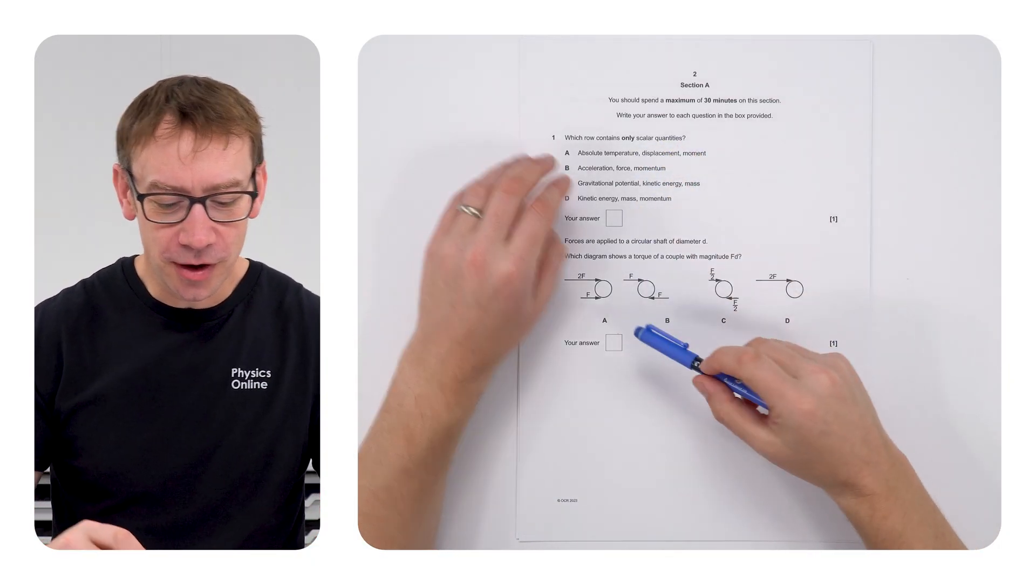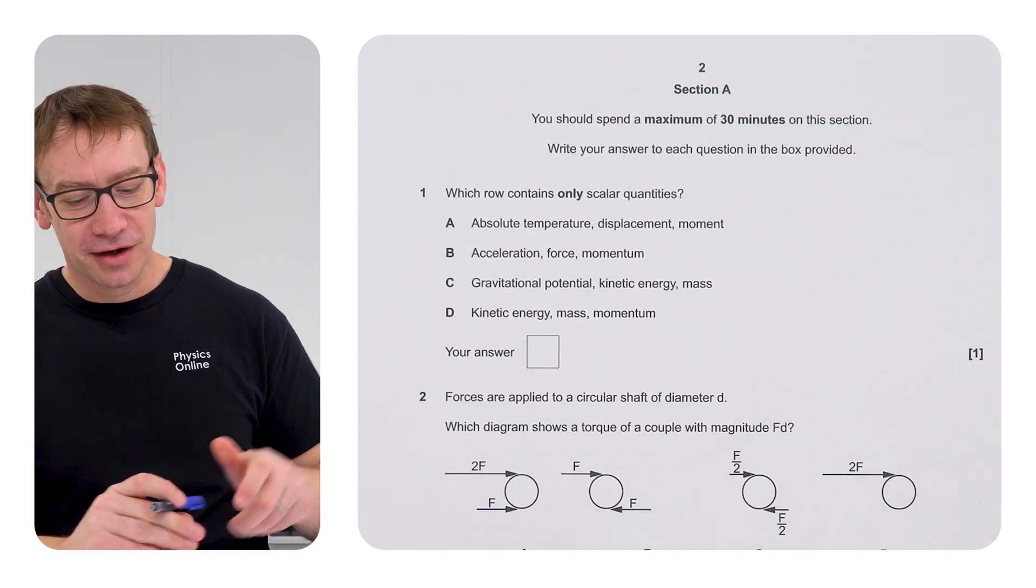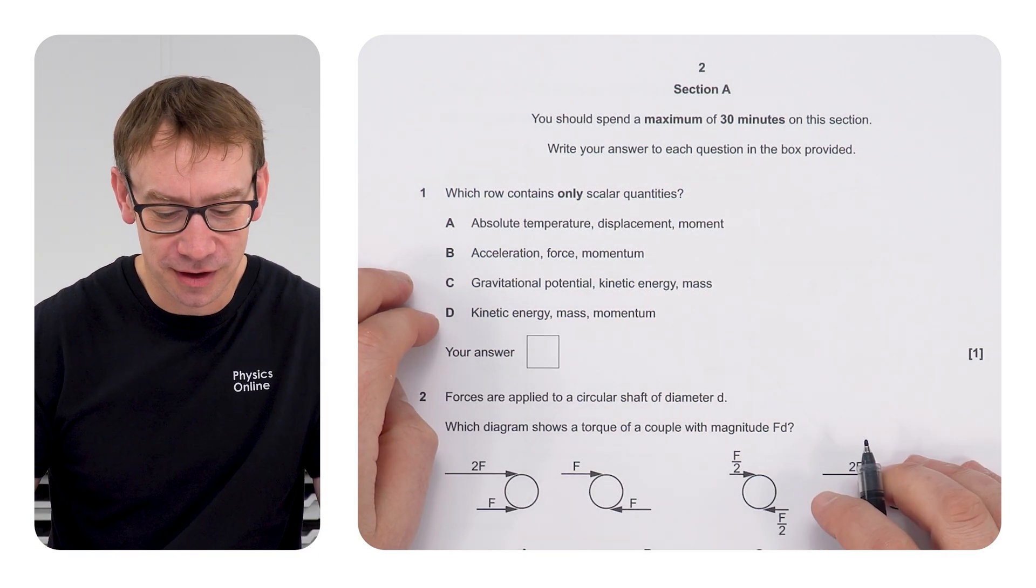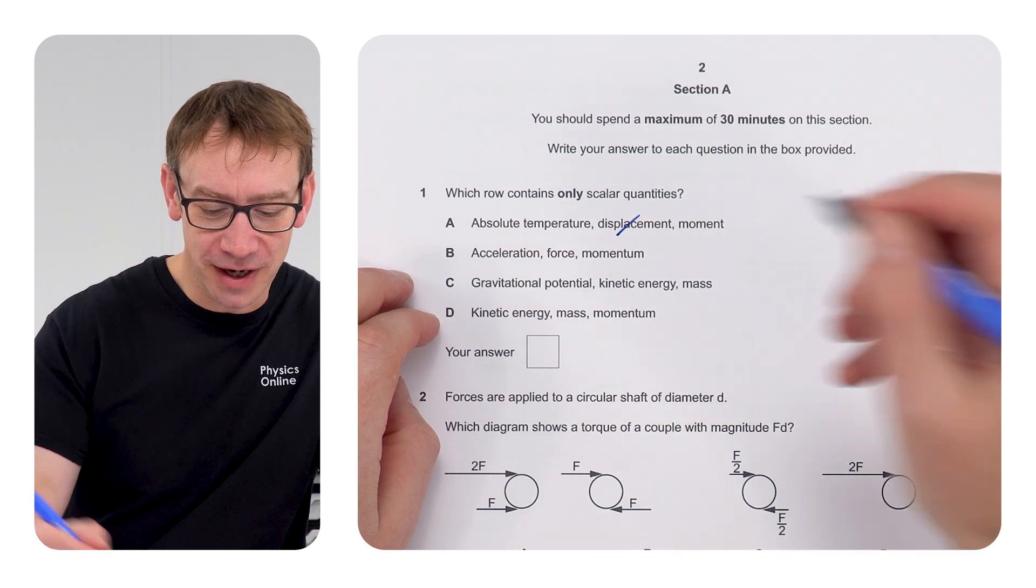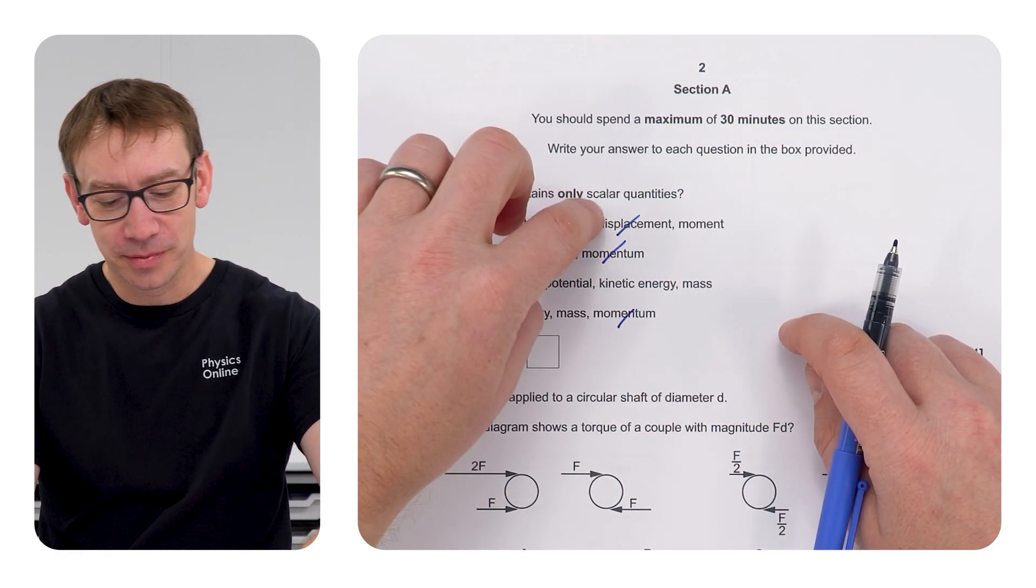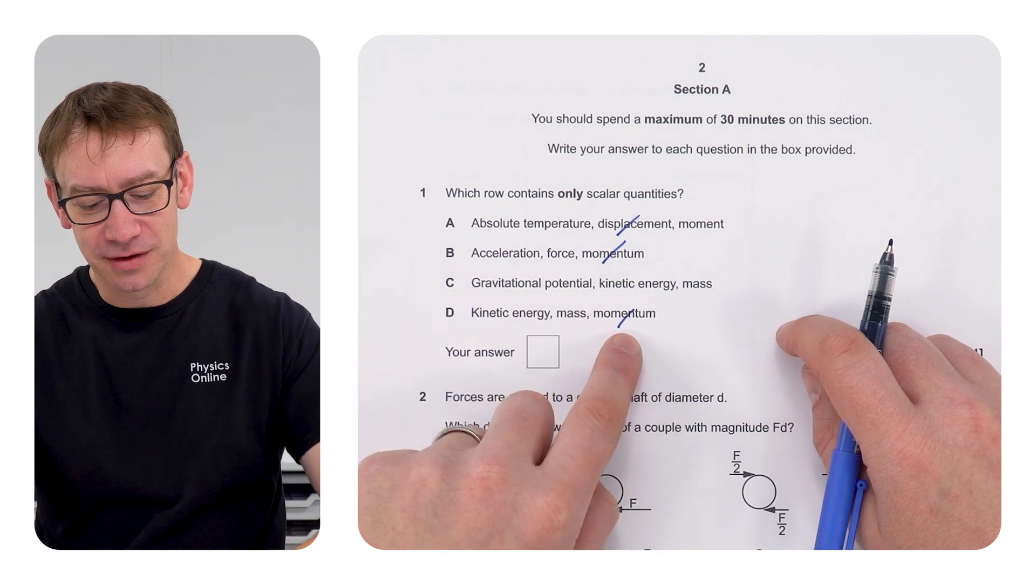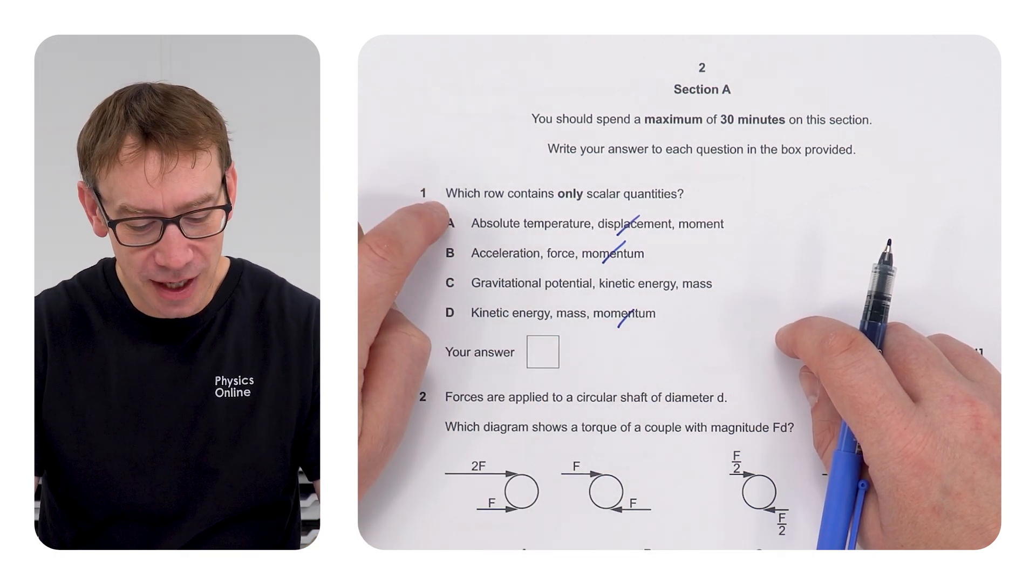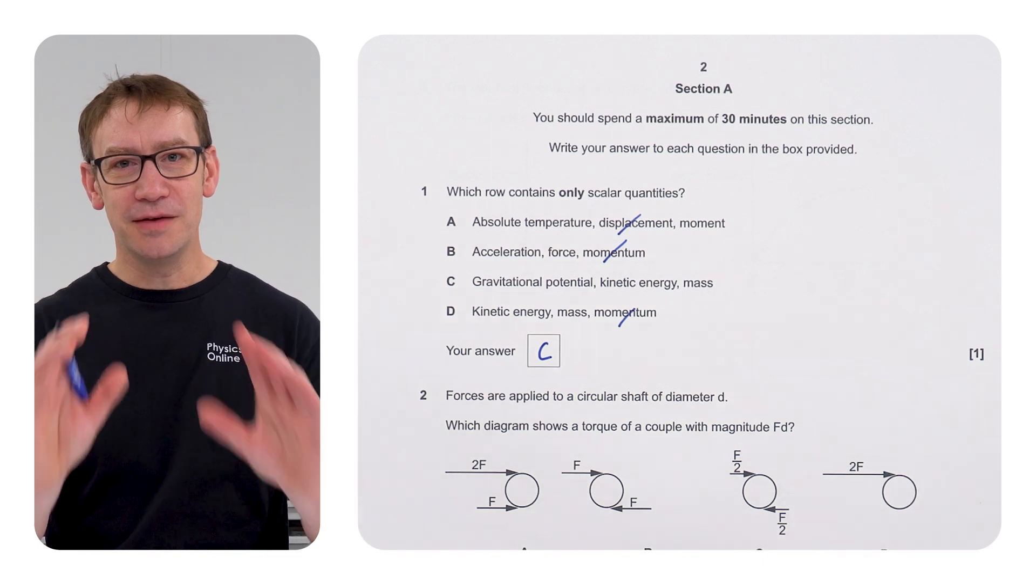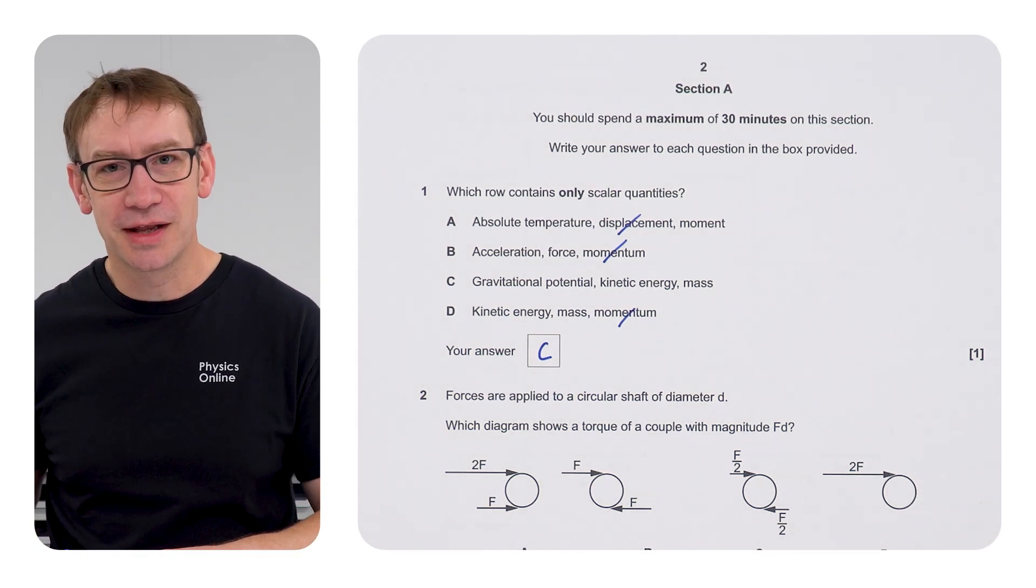The first one: which row only contains scalar quantities? All we need to do is identify any vectors and we know that can't be the answer. We know that displacement is a vector, momentum is a vector, and therefore just by knowing that these three are vectors the answer can't be A, B, or D, so the answer for this one is C. Even if you're a GCSE student you should be able to get that correct.